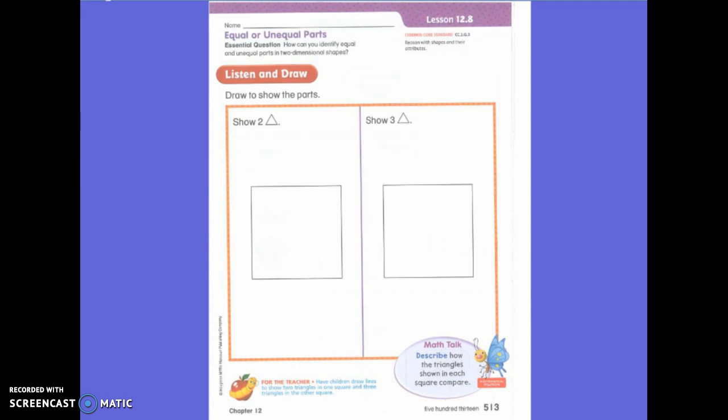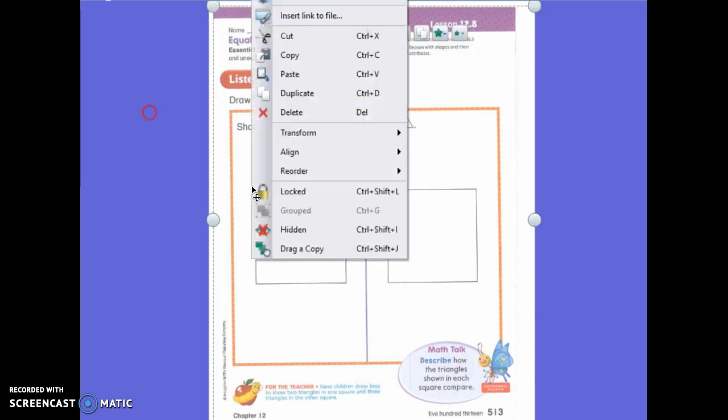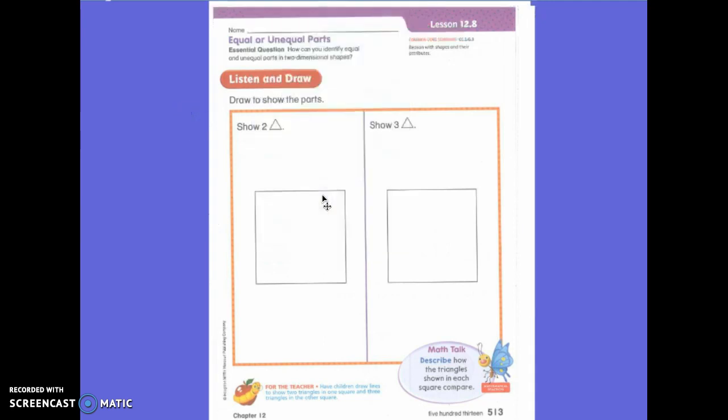How many sides and vertices does a triangle have? Good job, three sides and three vertices. So, where will we draw our line? From the top corner to the bottom corner. Okay? Just like this.